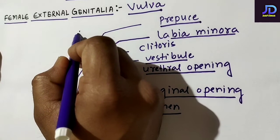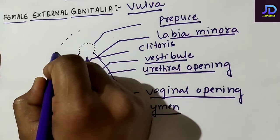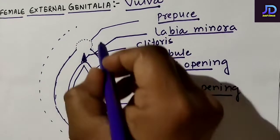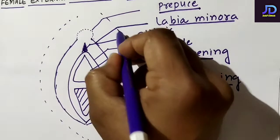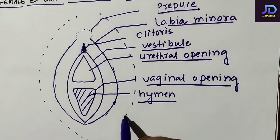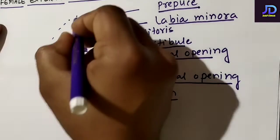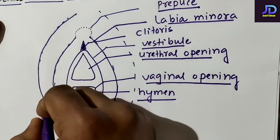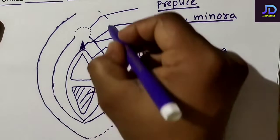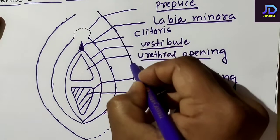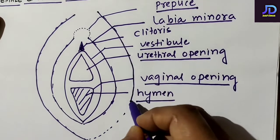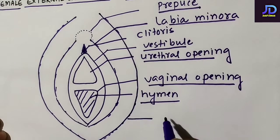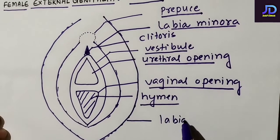Around the labia minora there is another membranous fold, and this membranous fold is known as labia majora.